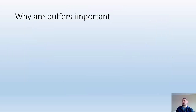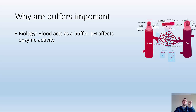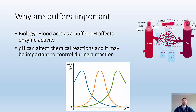Why are buffers important? In biology, blood acts as a buffer because pH is very important to enzyme activity. If you change the pH, enzymes aren't going to carry out reactions as effectively or efficiently. It's also important in chemistry — if we're trying to make a product, a lot of these reactions are pH sensitive, and pH can affect how well and how quickly the reaction is happening. So it's important to control pH during some reactions.